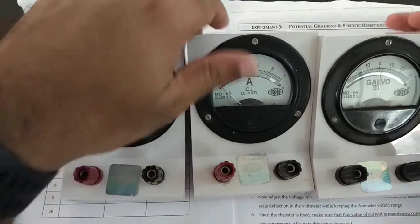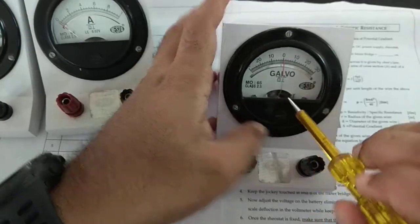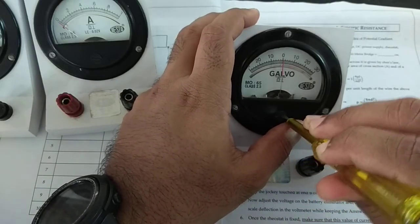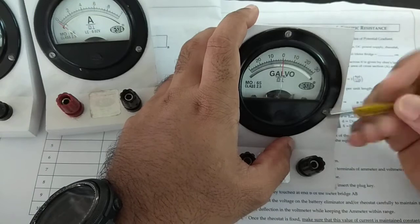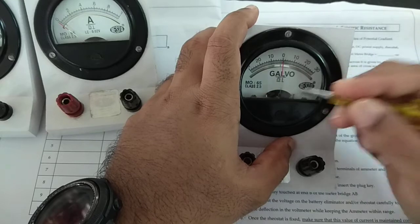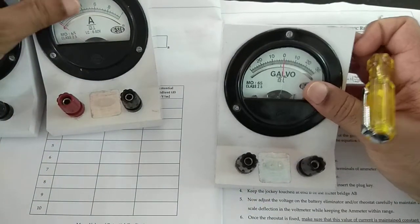So, galvanometer used for finding the direction of current and primarily used for finding that particular situation where there is no current passing through. This is a very important aspect of all the practicals that we do.